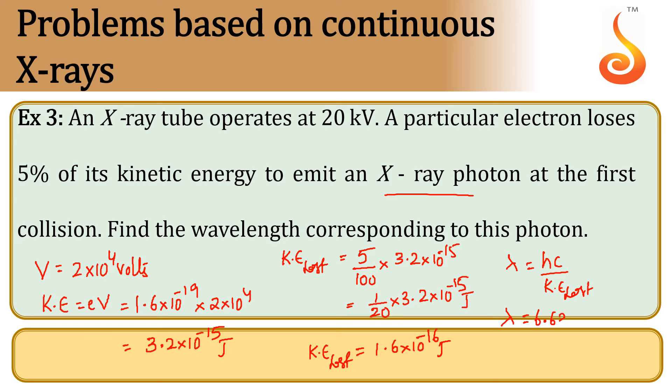H is 6.63 × 10^-34, c is 3 × 10^8, by kinetic energy lost is 1.6 × 10^-16 joules. Therefore, by simplifying it, the wavelength value we get is 1.242 nanometers.